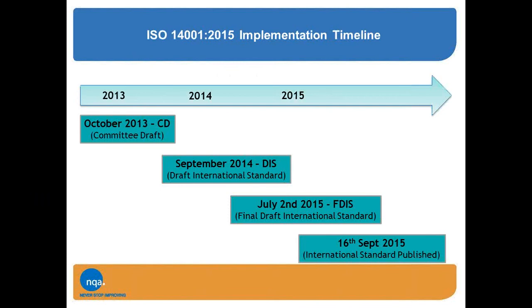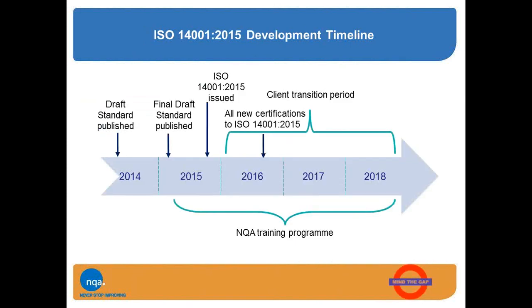This shows the journey from committee drafts through draft standards to FDIS and now the 15th of September publication date. Regarding our process, we are now at the point where ISO 14001:2015 is issued. The end date is the 15th of September 2018, and by that date all existing 2004 certificates will expire automatically. So if you haven't made the transition and had an update visit by 15th September 2018, you'll find yourself with no certificate.